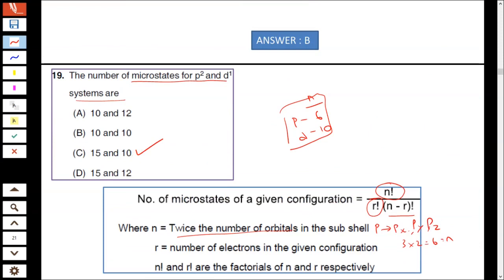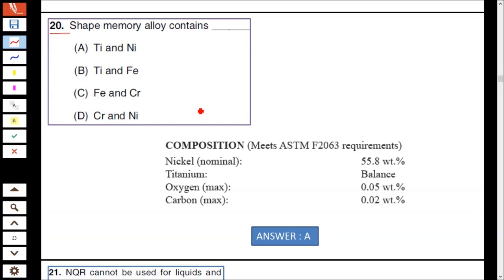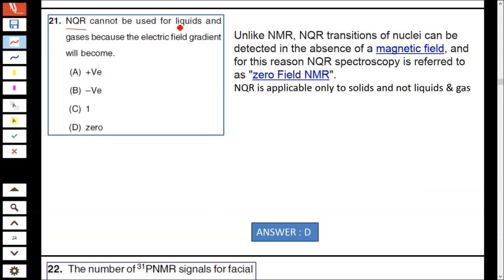Question number 20: Shape memory alloy contains nickel 55 percent, titanium, oxygen, and carbon. Hence option A is correct—the shape memory alloy contains titanium and nickel. NQR cannot be used for liquids and gases because the electric field gradient becomes zero. NQR is applicable only to solids and not to liquids and gases. Hence option D is correct.